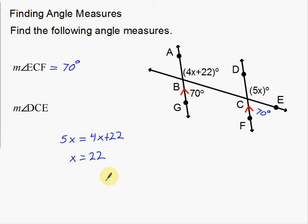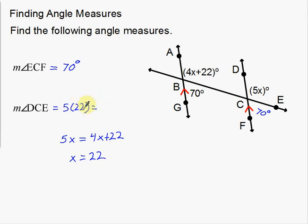Now I have to plug it back in. Remember that whenever you solve for something in geometry, you're not done — you always have to plug it back in. So if X equals 22, I plug in 5 times 22. 5 times 20 is 100, 5 times 2 is 10, so this is going to be 110 degrees. DCE is 110 degrees.